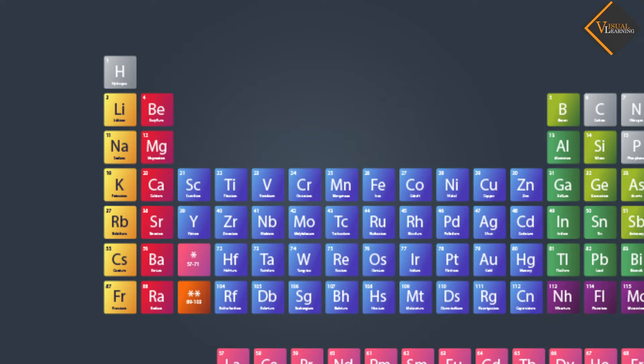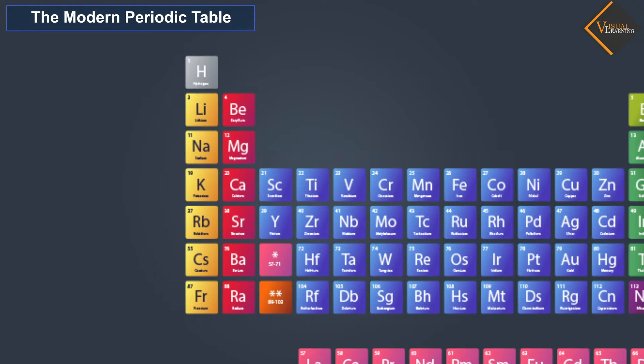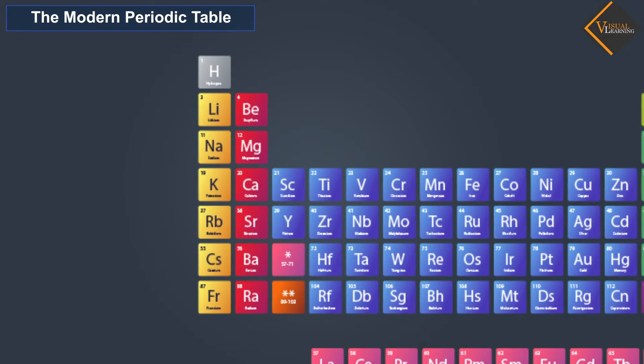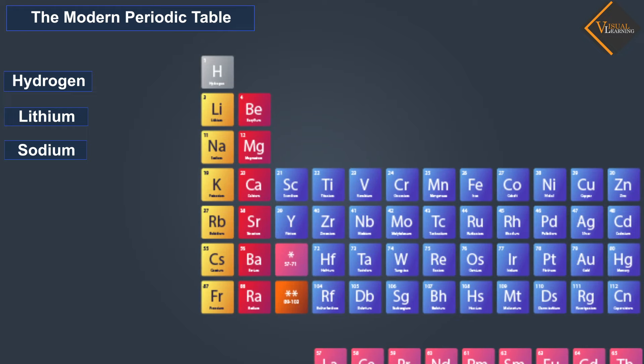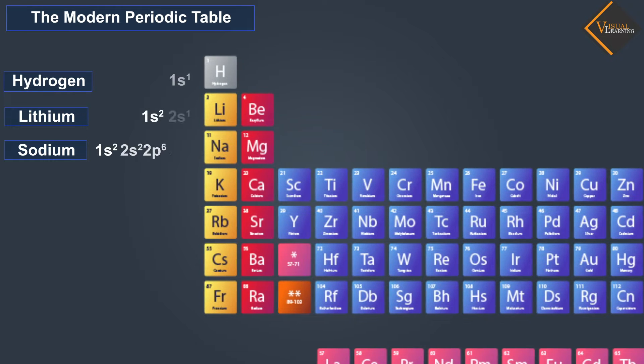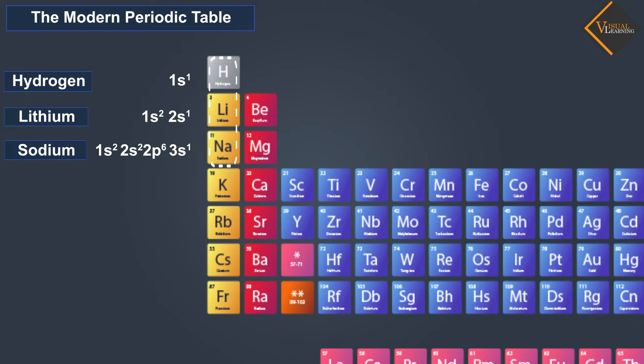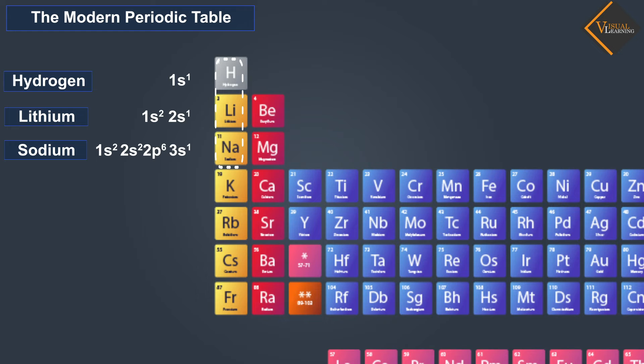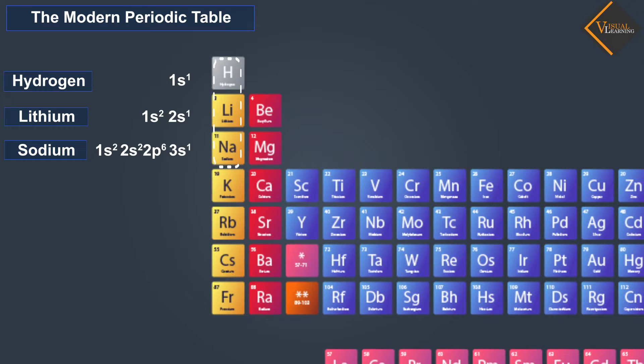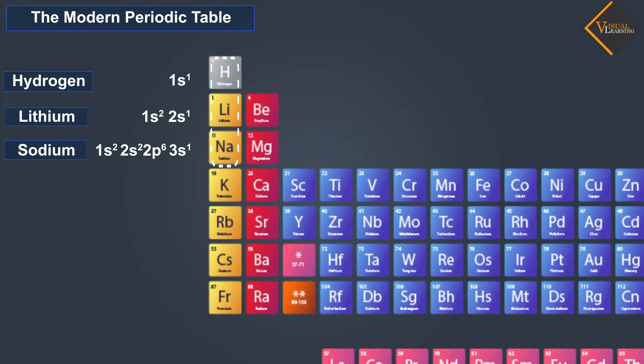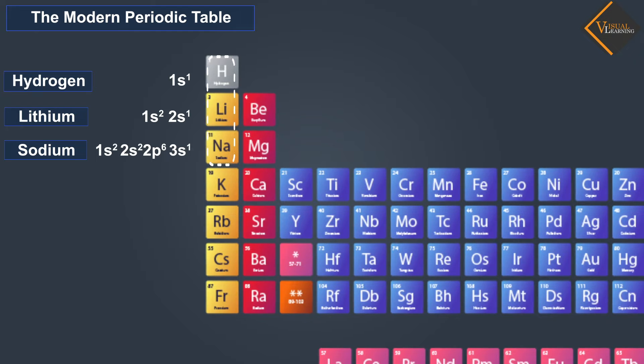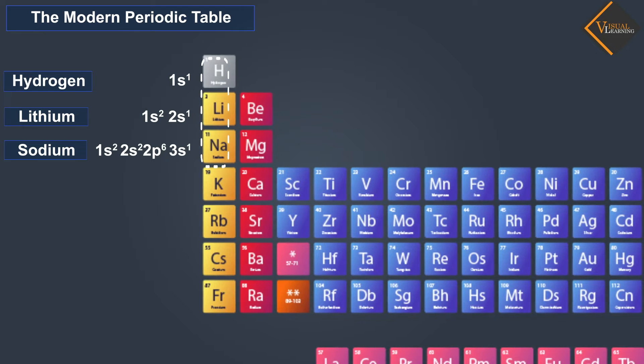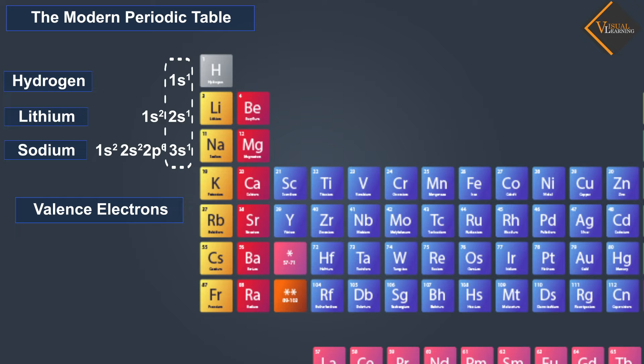Look at group 1 of the Modern Periodic Table and name the elements present in it. Write down the electronic configuration of the first three elements of group 1. What similarity do you find in their electronic configurations? You will find that all these elements contain the same number of valence electrons.